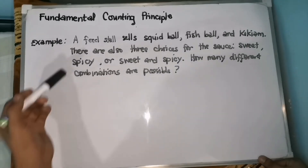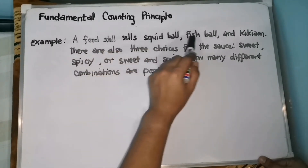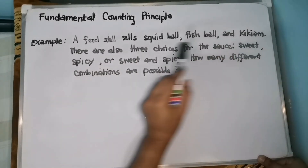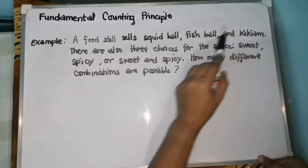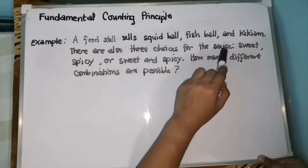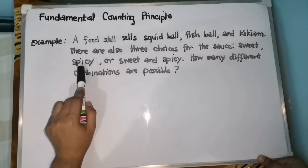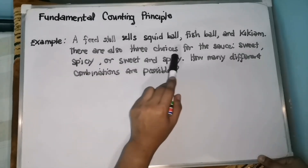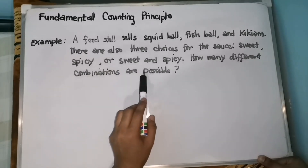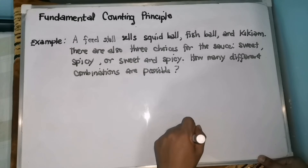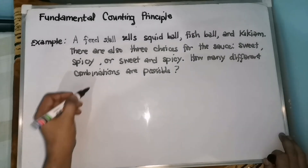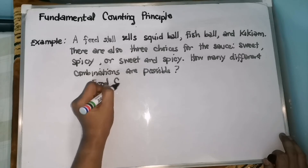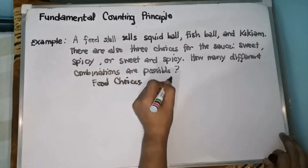Let's have another example. A food stall sells squid ball, fish ball, and kikiyam. These are the food choices: squid ball, fish ball, and kikiyam. There are also 3 choices for the sauce: sweet, spicy, or sweet and spicy. How many different combinations are possible? Before applying FCT, let's first use a tree diagram to identify all the outcomes.